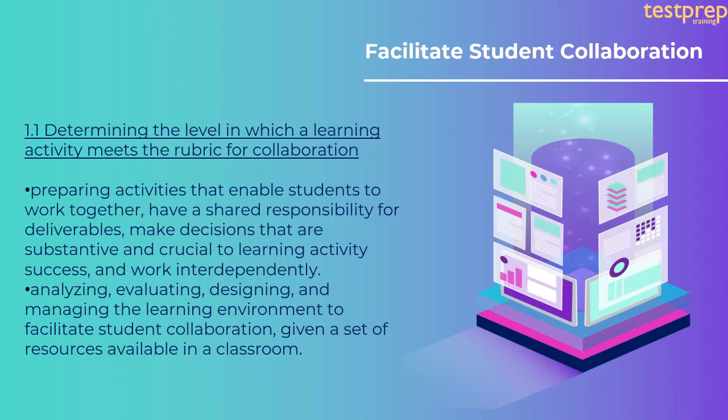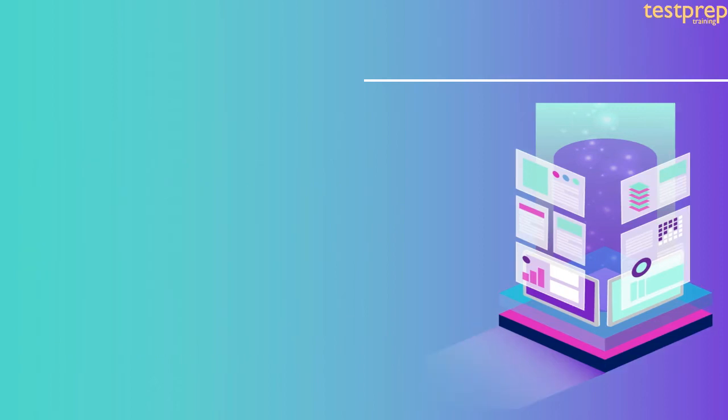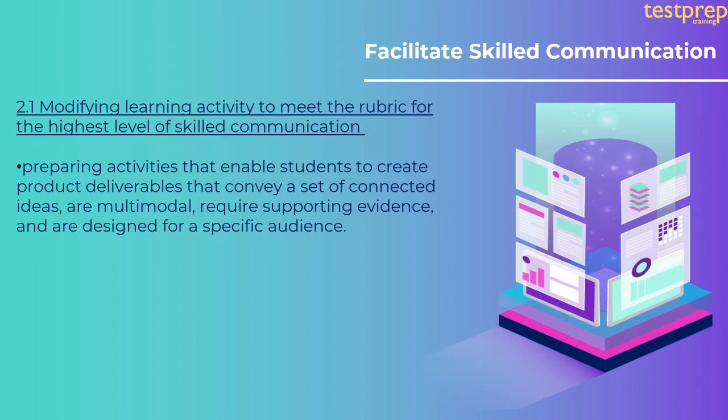Students should have a shared responsibility for deliverables, make decisions that are substantive and crucial to learning activity success, and work interdependently. Second, analyzing, evaluating, designing, and managing the learning environment to facilitate student collaboration given a set of resources available in a classroom. Second, facilitate skilled communication: 2.1 modifying a learning activity to meet the rubric for the highest level of skilled communication.